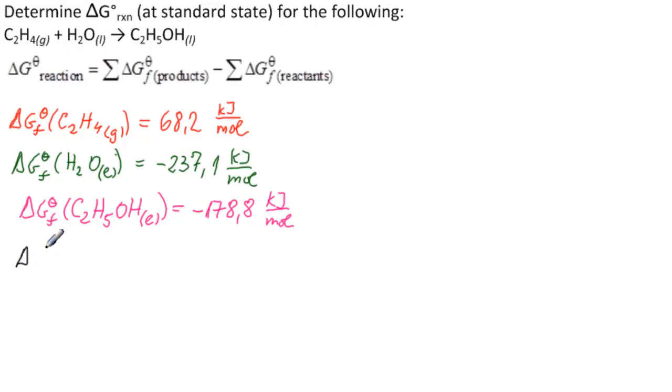ΔG° of the reaction equals products minus reactants. This is the product: minus 178.8, minus parenthesis. What do we have for reactants? 68.2 plus minus 237.1.